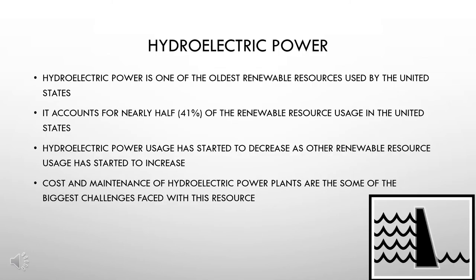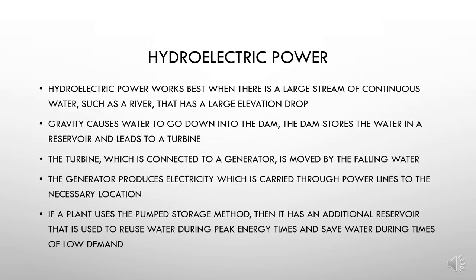Hydroelectric power. Hydroelectric power is one of the oldest renewable resources used by the United States, accounting for nearly half — or 41 percent — of renewable resource usage in the United States. Although hydroelectric power usage has started to decrease as other renewable resource usage has increased. Cost and maintenance of hydroelectric power plants are some of the biggest challenges faced with this resource. Hydroelectric power works best when there is a large stream of continuous water, such as a river, that has a large elevation drop.